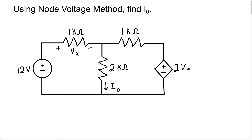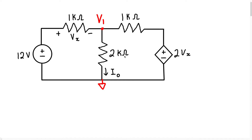Now let's begin. We're going to be using node voltage analysis, so the first thing we're going to do is identify the essential nodes. We have two essential nodes in all — node 1 up here, and I'll write the node voltage at that node as V1. We have another node down here, and I'm just going to take this node as our reference node.